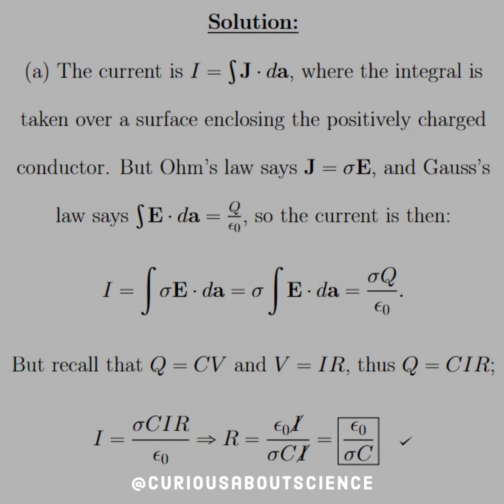But recall that Q is equal to CV, and V is equal to IR. So if we sub in V into the Q equation, we see that Q is equal to CIR. All right, fair enough.